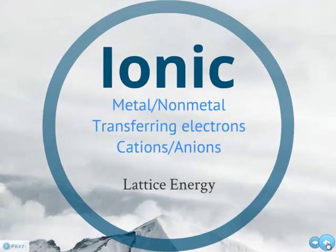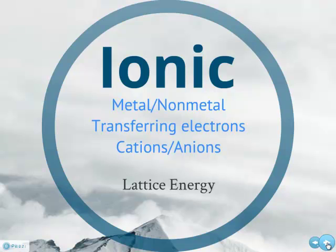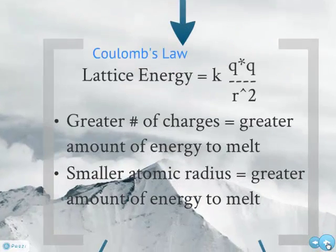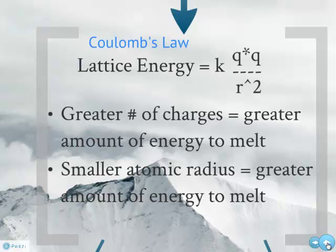The next strongest force is ionic. Ionic compounds — those are metals and non-metals, cations and anions, and they're transferring their electrons. Most of our ionic compounds are solids. And everything we've done so far — covalent network, metallic, ionic — these are solids at room temperature. If you want to melt down this solid, it's going to take a lot of energy, and you're actually going to have to overcome what we call lattice energy.